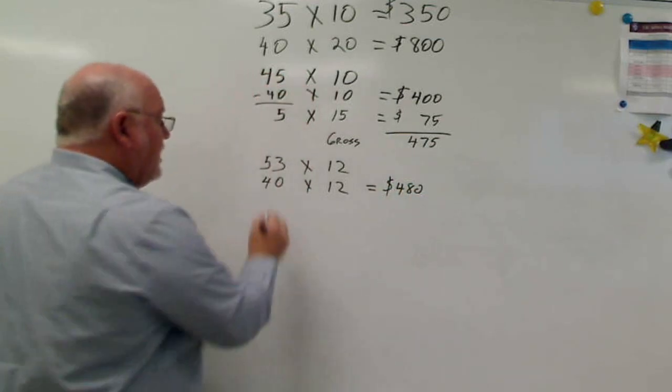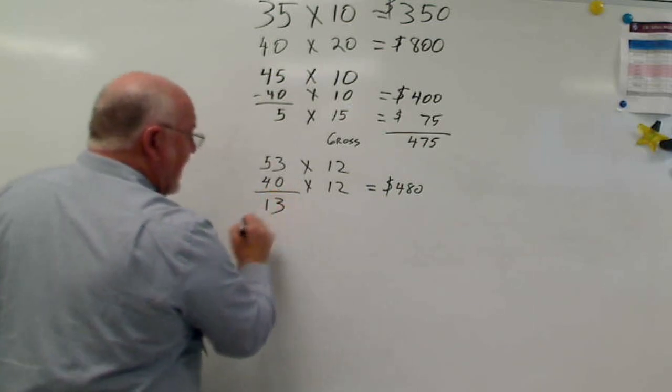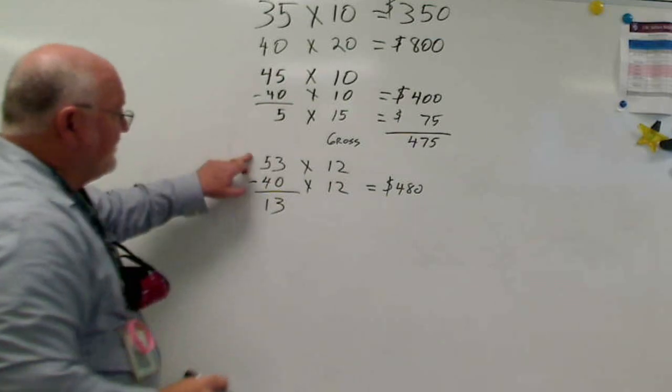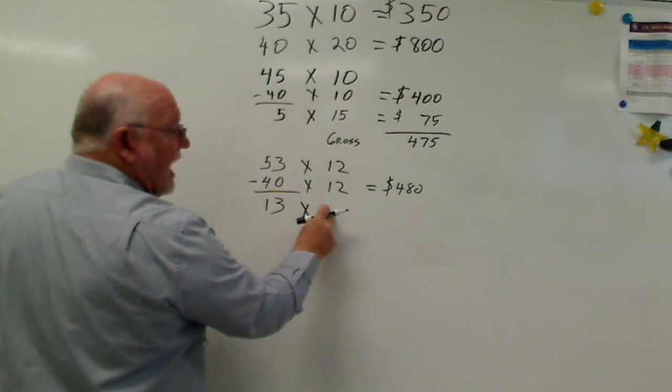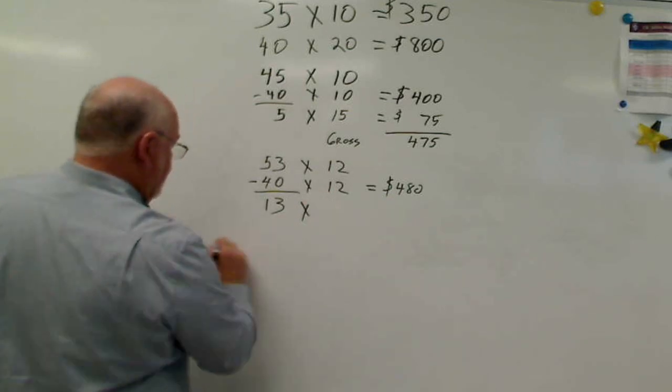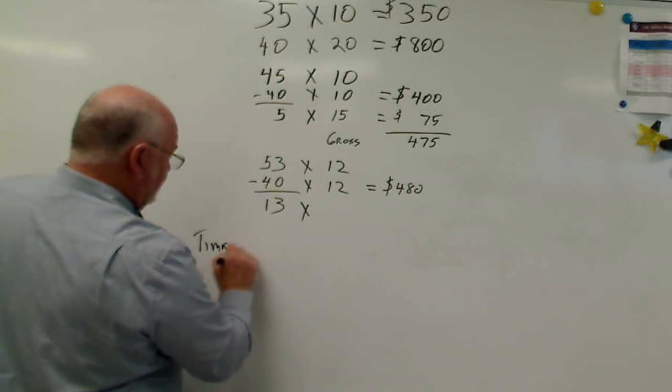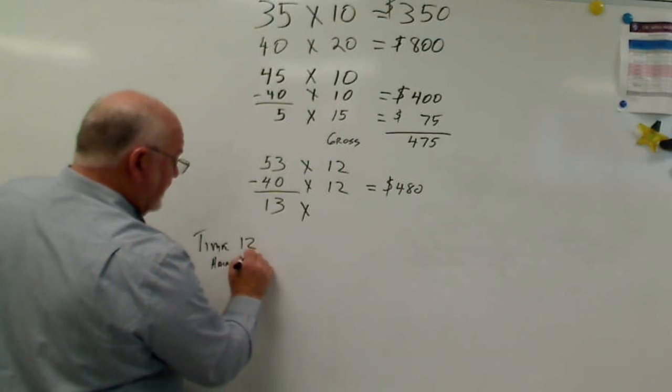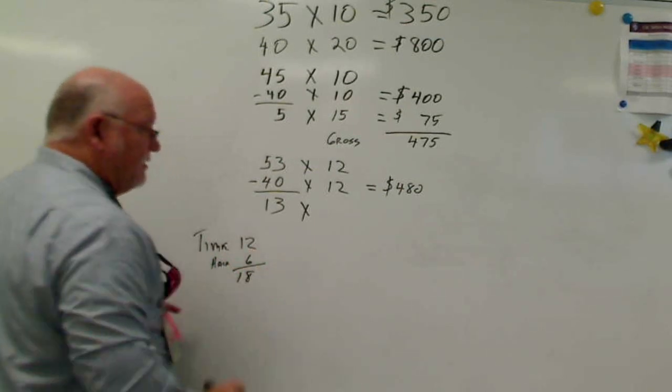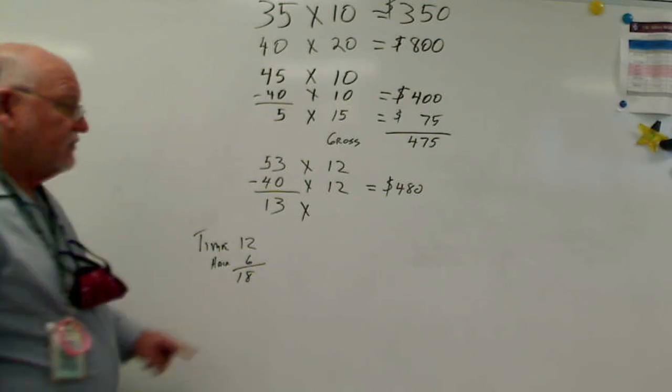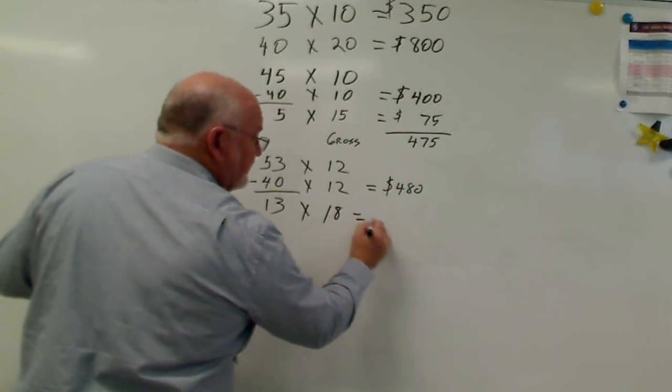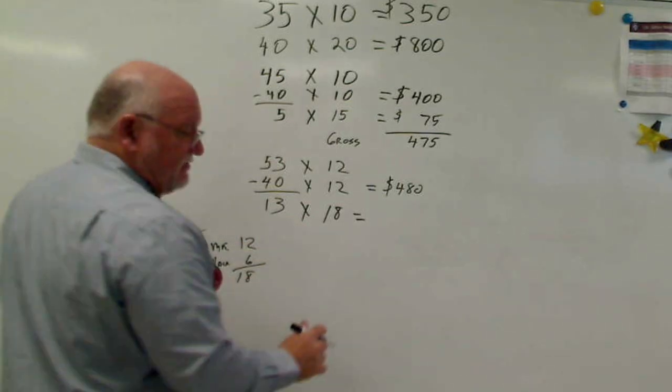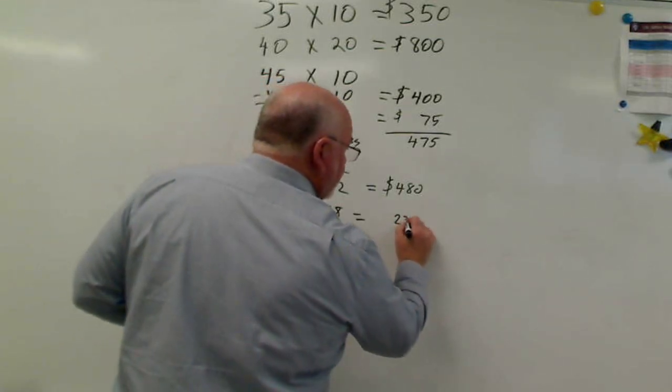Now our problem is we have 13 hours because I subtracted 40 from 53. I have 13 hours, and I know that it's going to be at time and a half. And so time is 12, half of 12 is 6, and so my pay is going to be $18 an hour here. So 13 at time and a half is going to be $18, and to figure that we're just going to multiply 13 times 18, and we're going to get 234.